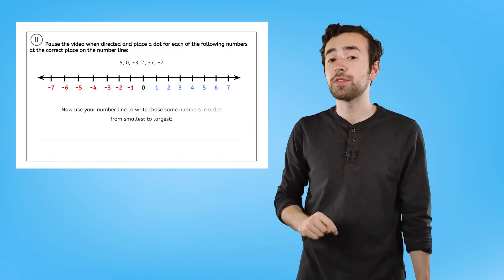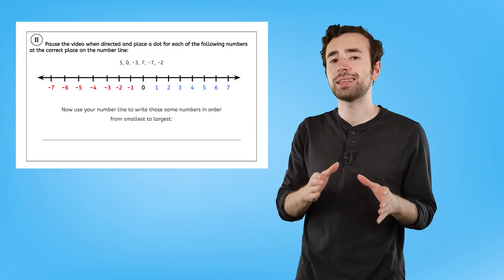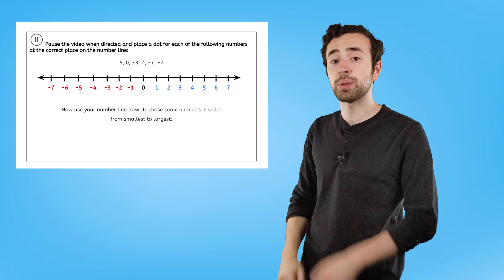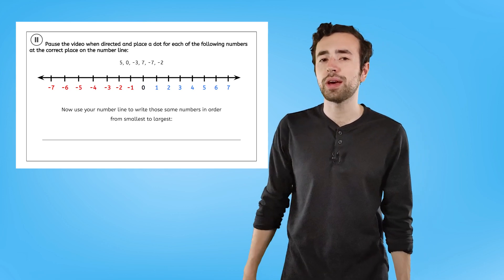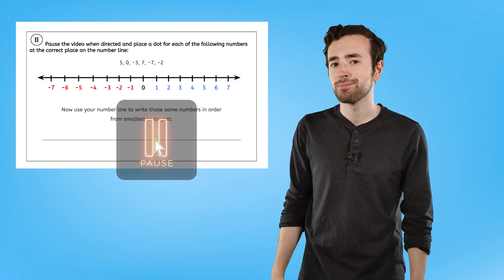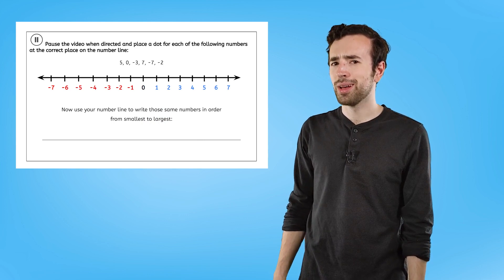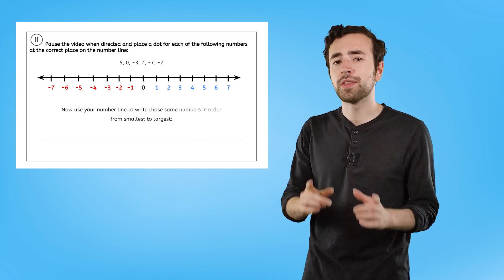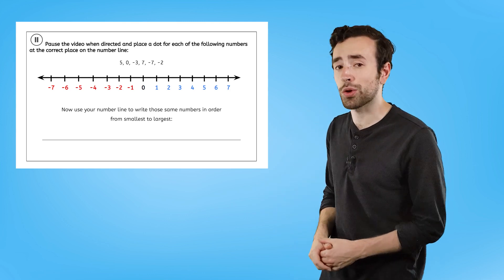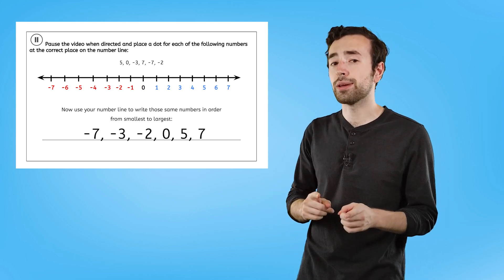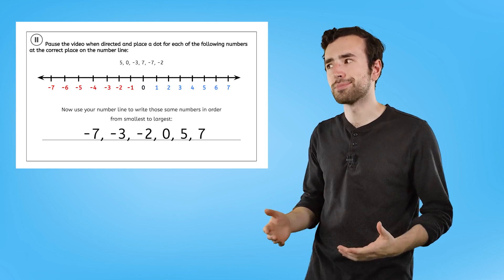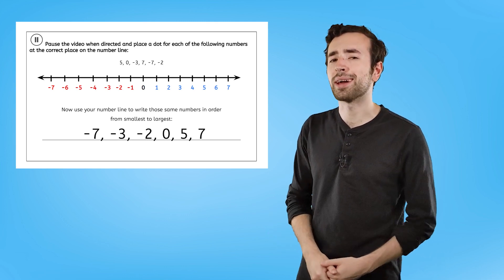Now it's time for you to practice. Find the page of your PDF that has a number line on it, and pause the video again to practice placing numbers on the number line in your PDF, and then ordering them from smallest to largest. Nice job. From smallest to largest, the numbers should be in this order: negative seven, negative three, negative two, zero, five, and seven.